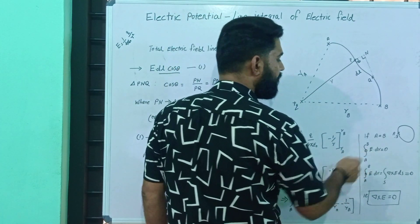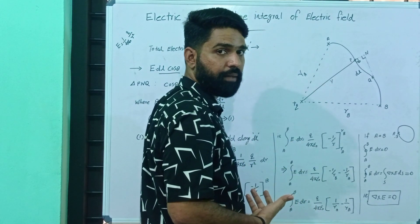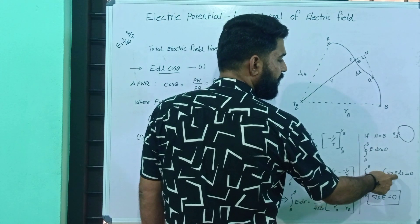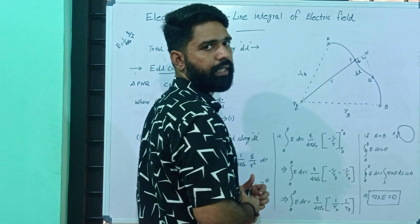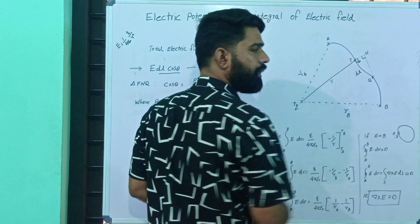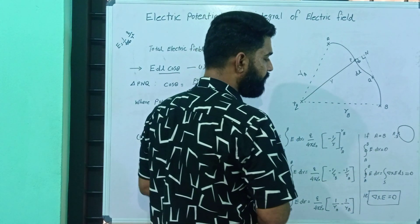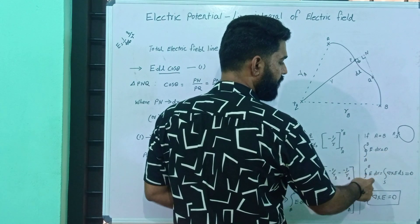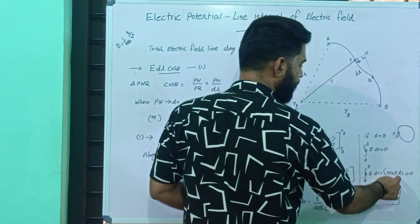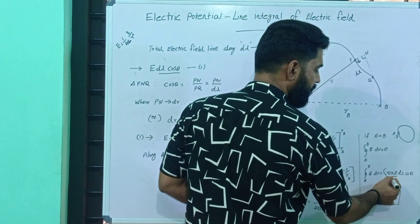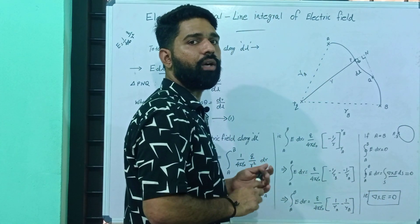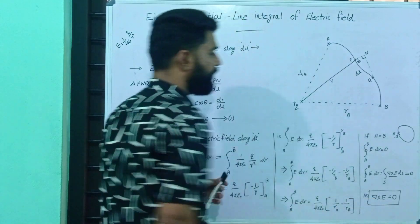Since the closed line integral equals zero, we can apply Stokes' theorem to convert it to a surface integral: ∮ E·dL = ∬ (∇×E)·dS. Since the closed line integral is zero, the surface integral of curl E equals 0. Therefore, curl of E is always zero — the curl of the electric field is always zero.